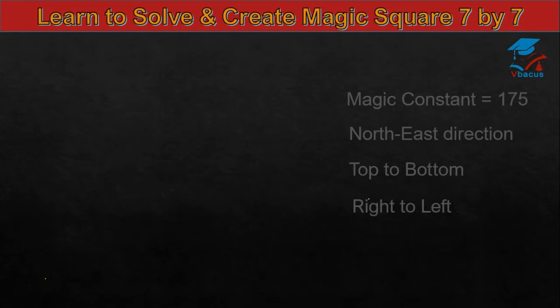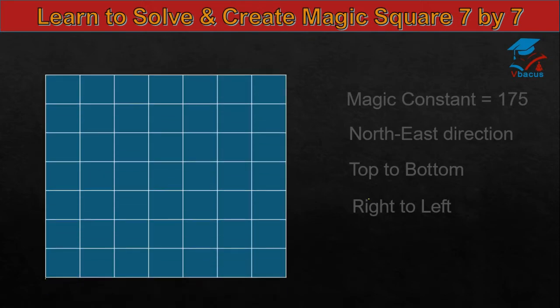Here the magic constant is 175 and you have to follow north-east direction. If you go top and there is no square, then you have to go back to bottom and write the next number. If you have reached right and there is no square, then you have to write the next number in the left most square. So I am starting the magic square, filling the numbers. First, we have to write 1 in the center box at top row.